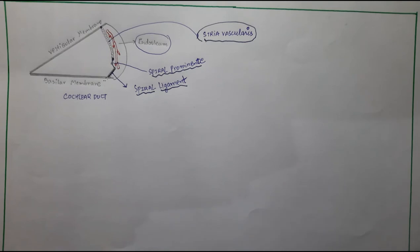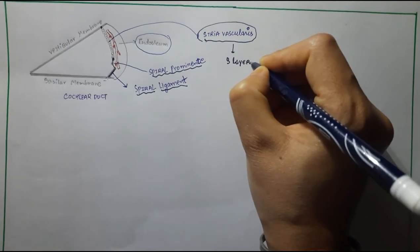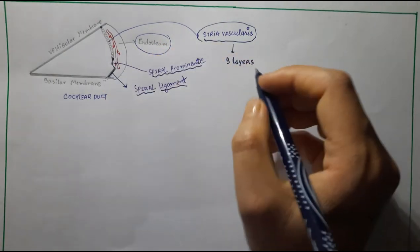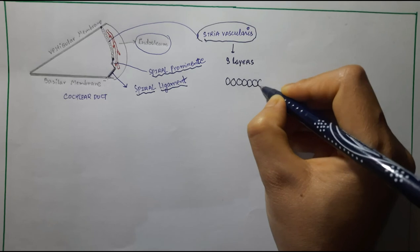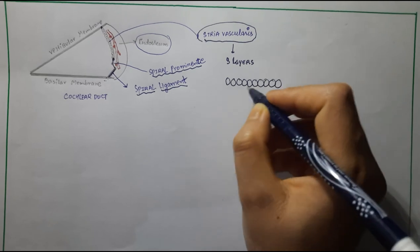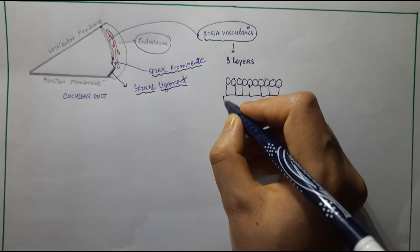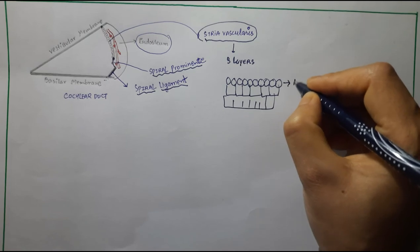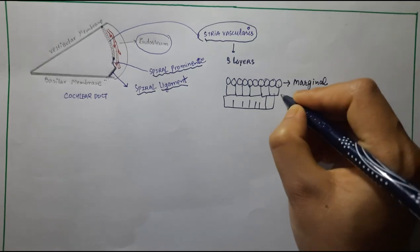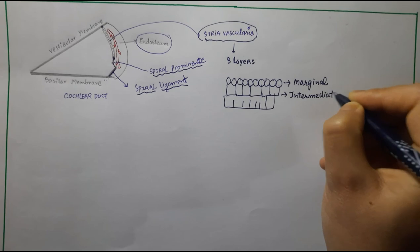Stria vascularis तीन layers का बना होता है — यह made up of three layers है। यह specialized epithelium तीन layers का बना होता है: पहली layer marginal है, जो middle में है उसको intermediate बोलते हैं, और तीसरी layer basal है।